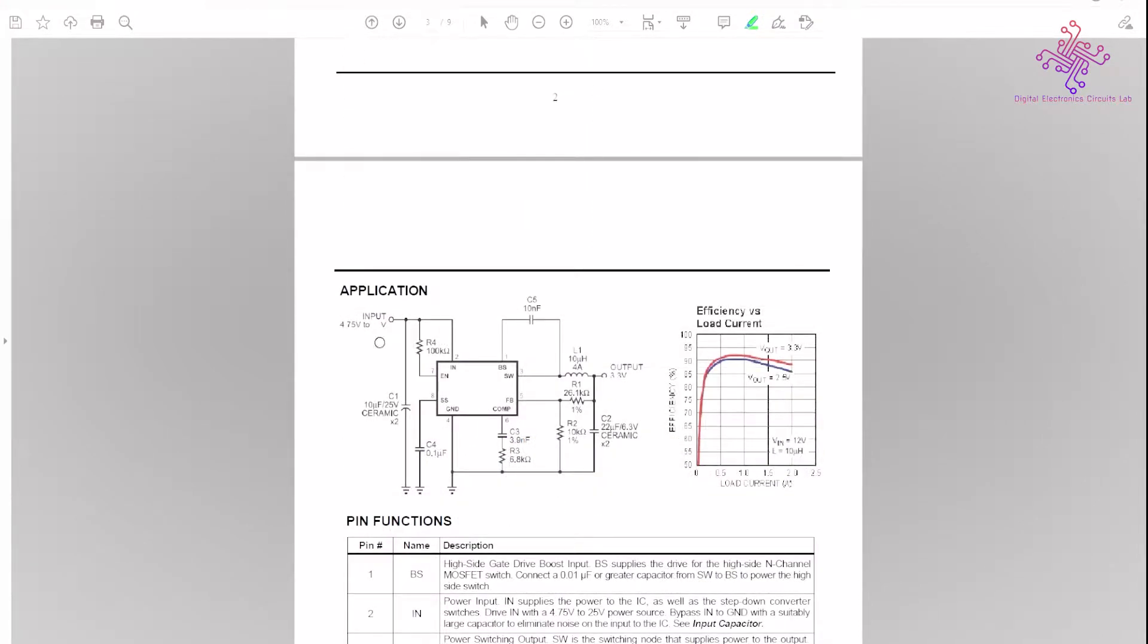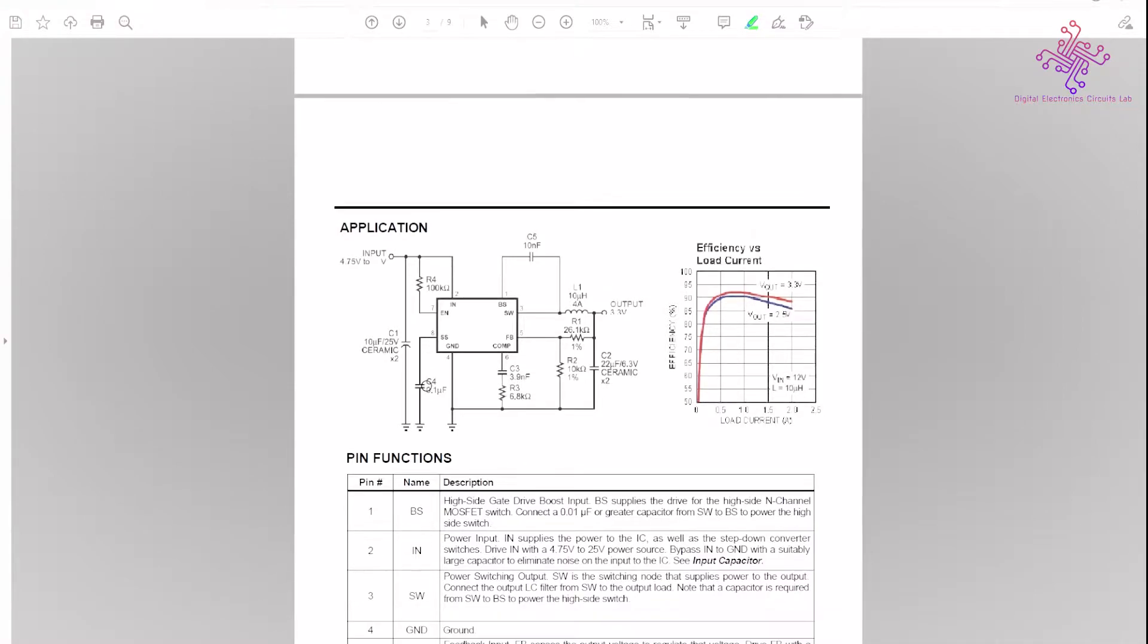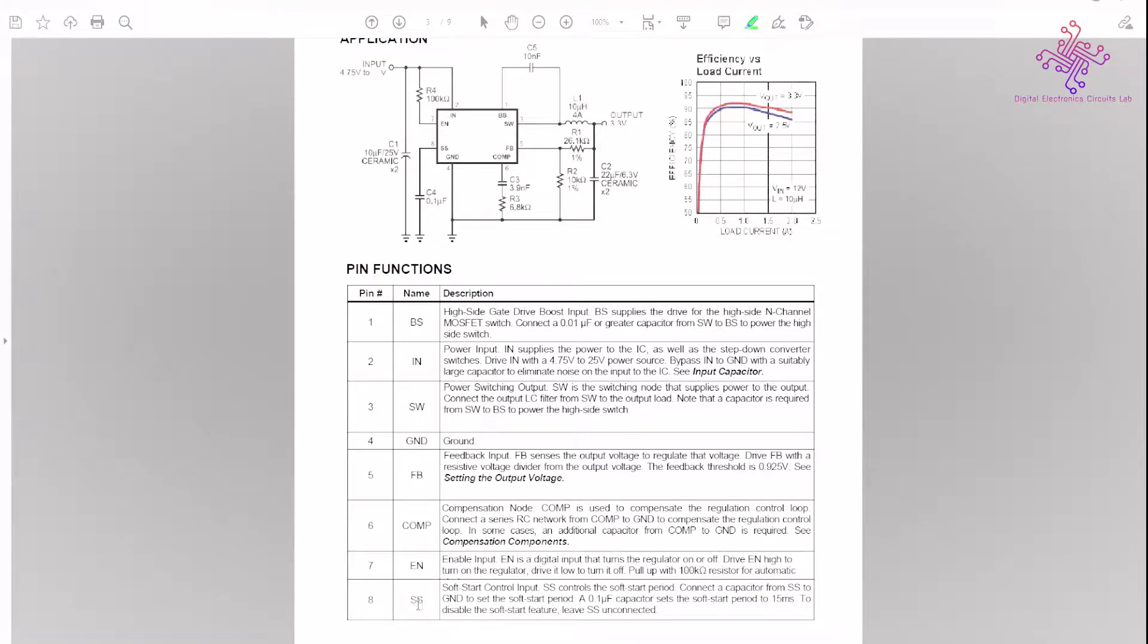Here is the typical application circuit of this chip. Pin 2 is the input, pin 7 is the enable pin which is connected with a 100k resistor. We have the SS pin for soft start control with a capacitor of 0.1 microfarad. We have the ground pin, then the comp pin which is basically the compensation node with an RC network - a 3.9 nanofarad capacitor with a 6.8 kilohm resistor connected to ground.